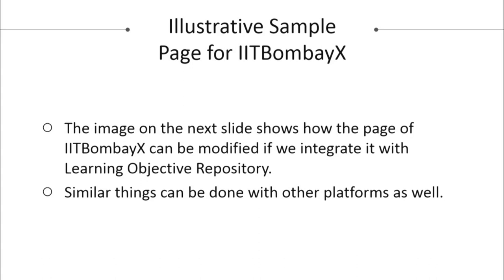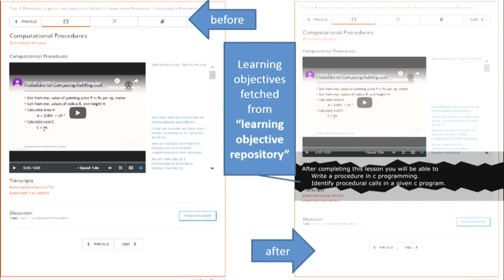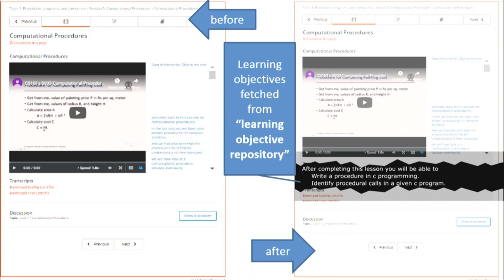The next slide shows how an IIT Bombay X unit page would look after integrating it with our repository. The image on the left shows the current scenario, and after integration the learning objectives would be listed on the page. This makes it easy for any student to decide whether to go through a unit based on their requirements — for example, if a student wants to write a procedure in C programming, they can check the learning objectives to decide whether that unit is relevant.